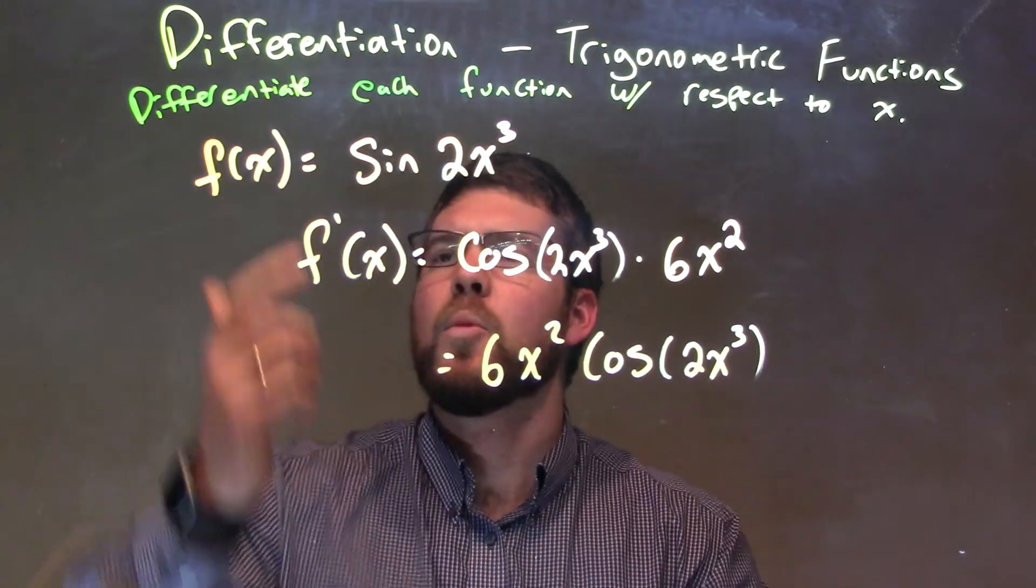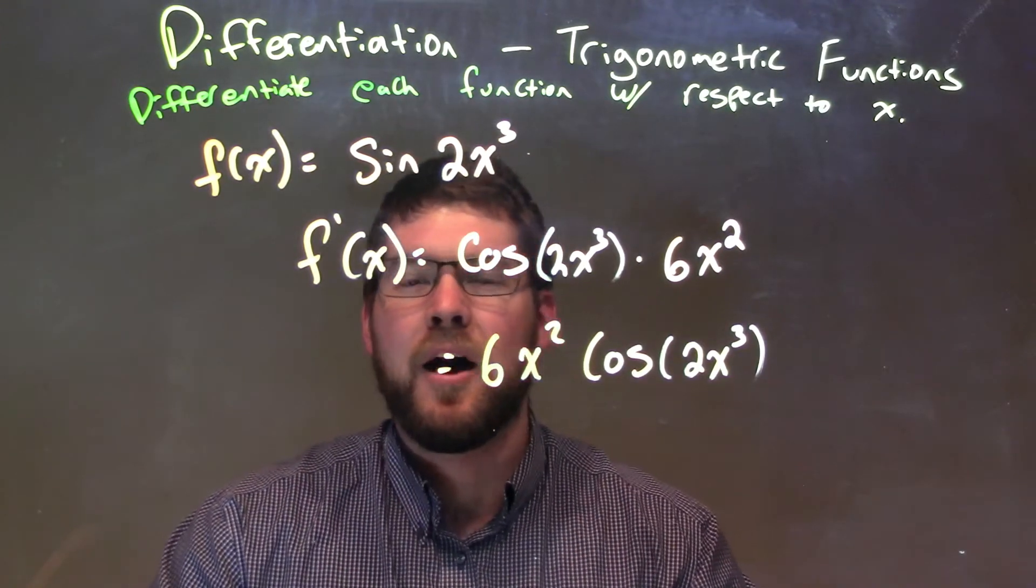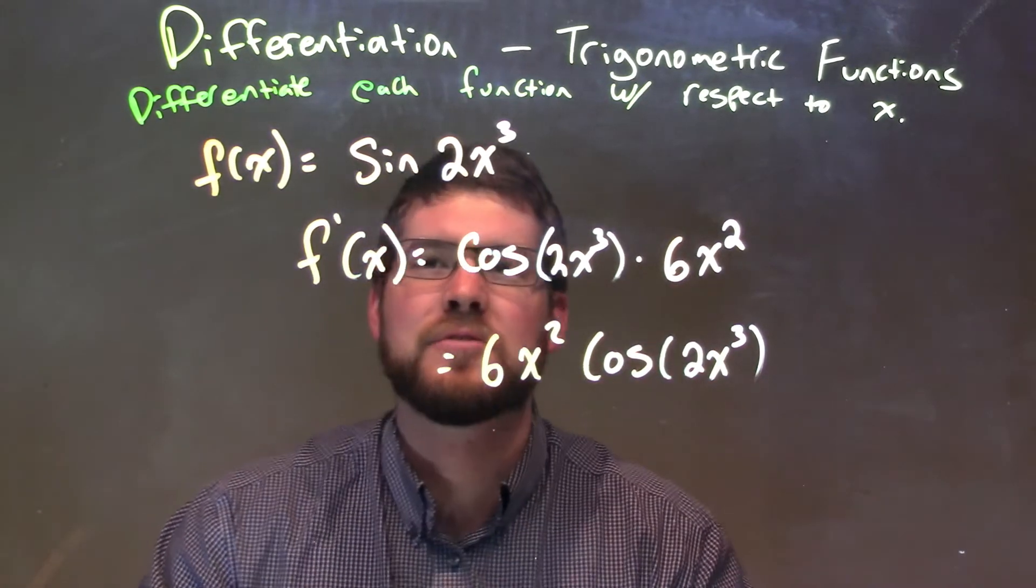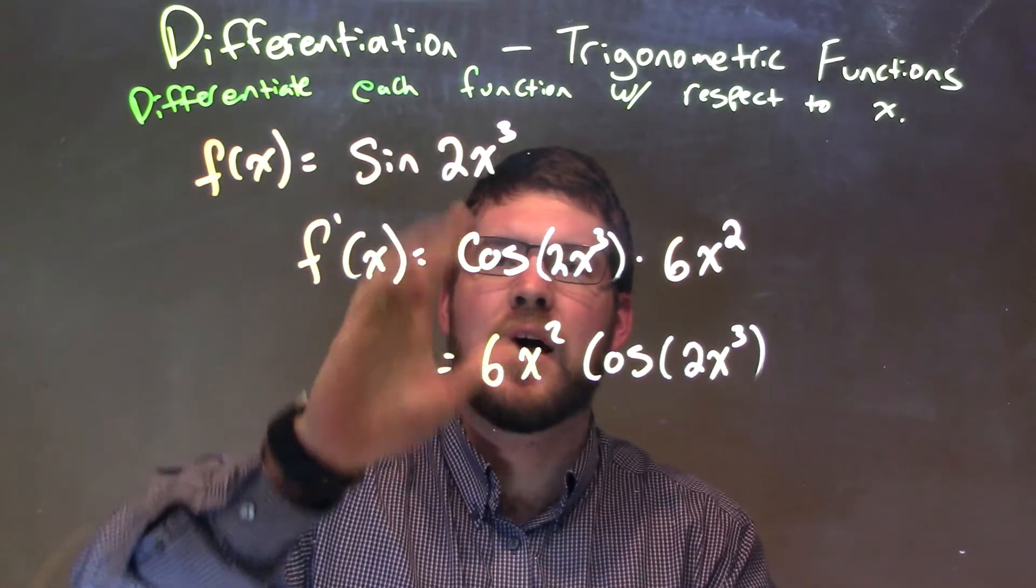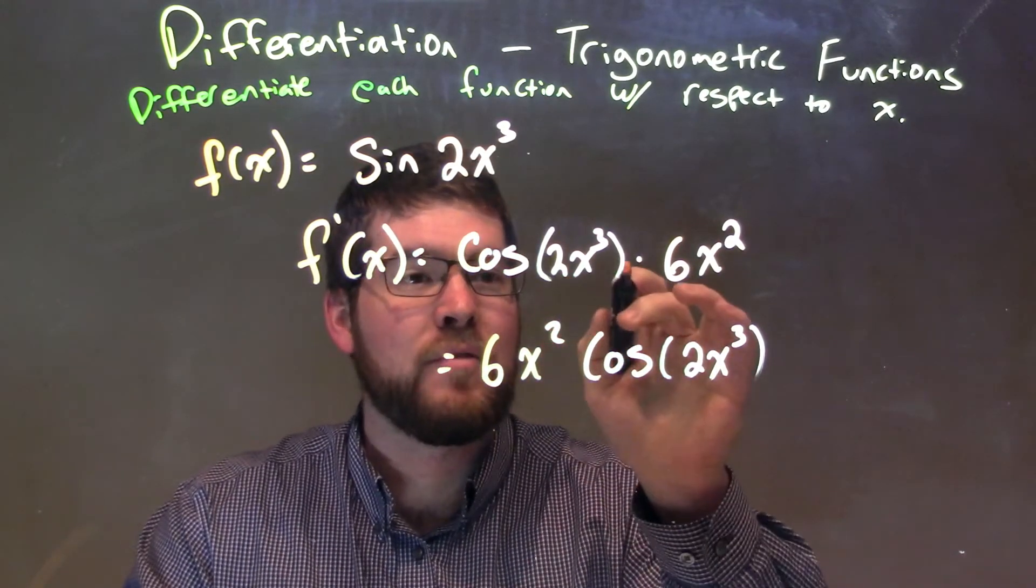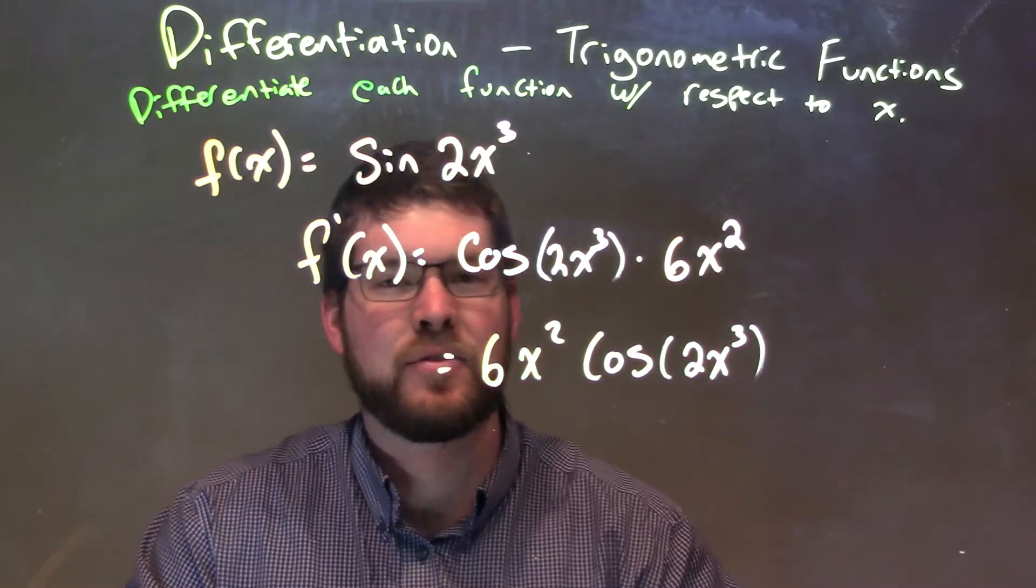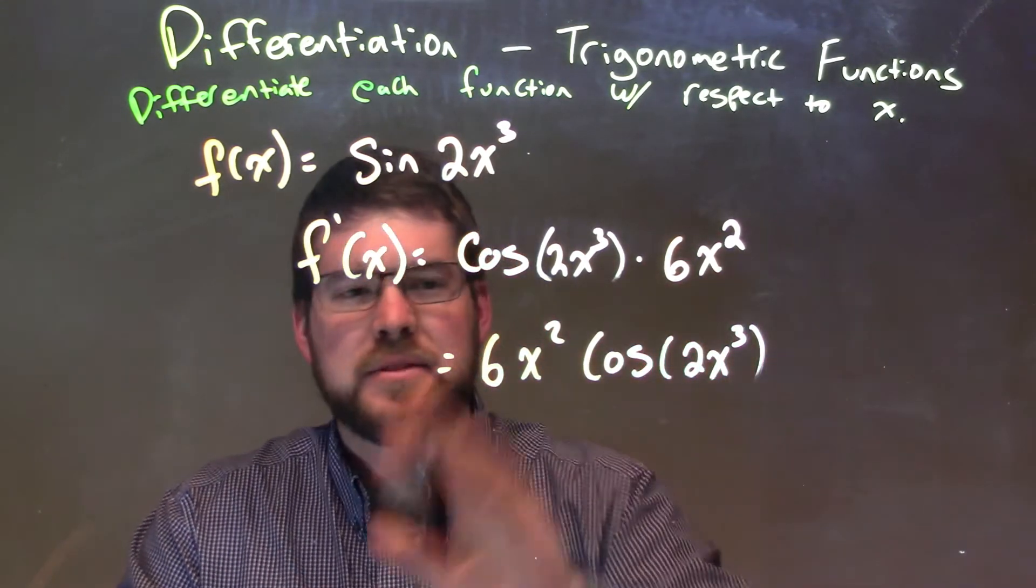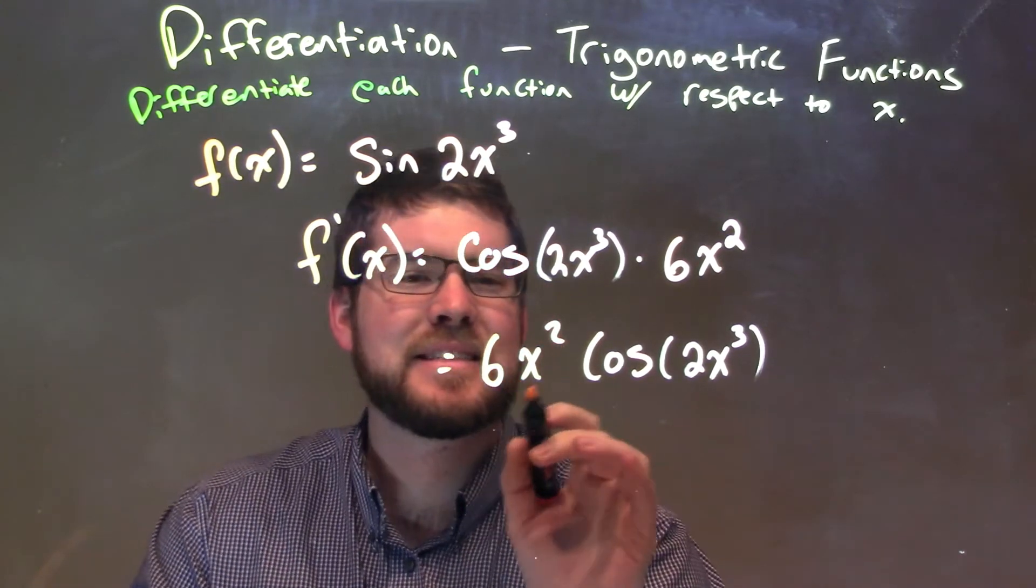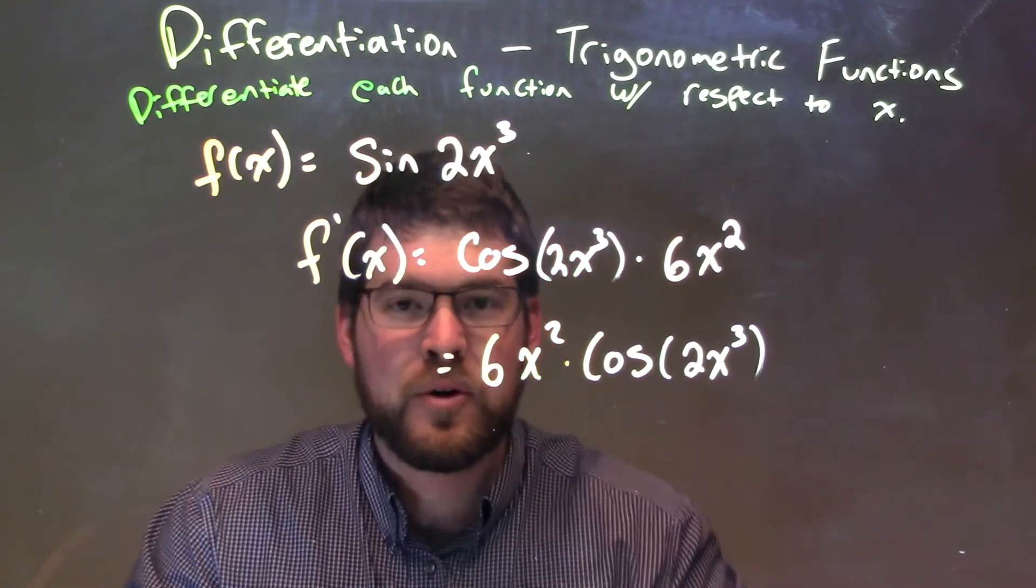So, let's recap. We're given f of x equals sine of 2x to the third. We need to apply the derivative of sine, as well as using the chain rule and the power rule here. So, derivative of sine was cosine and we kept the inside the same. Then, apply the chain rule, we still need to take the derivative of the inside and the derivative of 2x to the third is 6x squared. Now, I rearranged this to put 6x squared out front and so again, our final answer here for this derivative is 6x squared times the cosine of 2x to the third power.